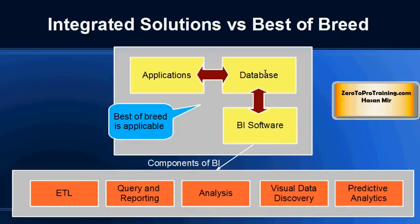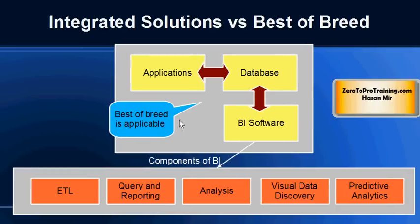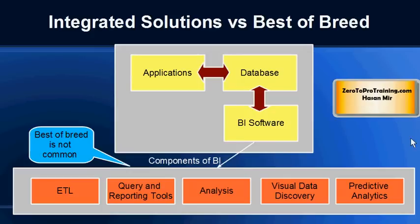Keep in mind that business intelligence software is not really one software that you download — it is usually a set of tools. Typically you would see these components: an extract, transform, and load (ETL) tool; a query and reporting tool; analysis tools; data discovery tools; predictive analytics tools; and so on. So best-of-breed is possible at the application, database, and business intelligence software level, but can people also do mix and match within the components?